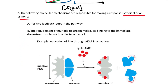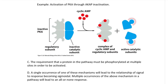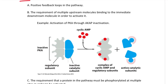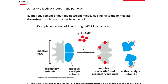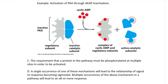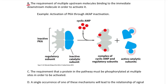Positive feedback loops and pathways include: the requirement of multiple upstream molecules binding to the immediate downstream molecule in order to activate it (example: activation of PKA through ACAP inactivation), and the requirement that a protein in the pathway must be phosphorylated at multiple sites in order to be activated. These mechanisms (A, B, and C) will be explained in more detail in an accompanying video. A single occurrence of one of these mechanisms will lead to the signal-to-response relationship becoming sigmoidal. Multiple occurrences in the pathway will lead to an all-or-none response.